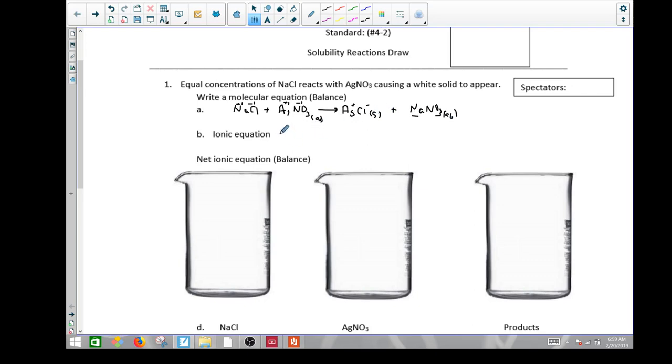The ionic equation, therefore, is going to be Na plus, plus Cl minus, plus Ag plus, plus NO3 minus. This is the first half of the ionic equation, showing that these are actually separated. Even though we put them together here, they're not together. So, let's draw the first beaker out.